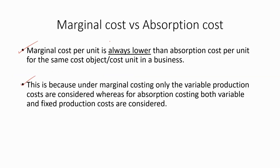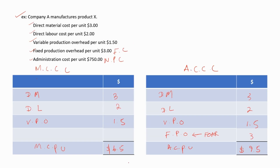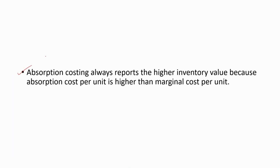As you can see, marginal cost per unit is always lower than absorption cost per unit. We can understand this because under absorption costing, we consider the fixed production overheads as well. Absorption costing always reports the higher inventory value because the absorption cost per unit is higher than the marginal cost per unit — so the inventory valuation will be higher for absorption costing. This is really important.